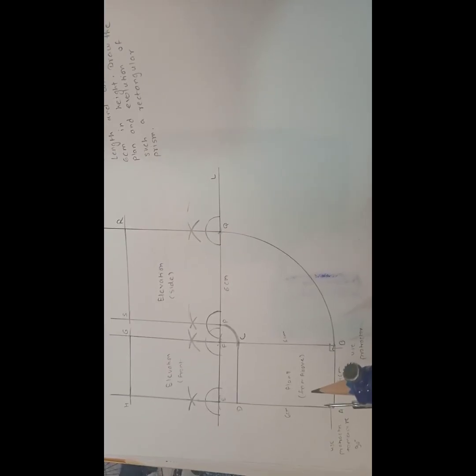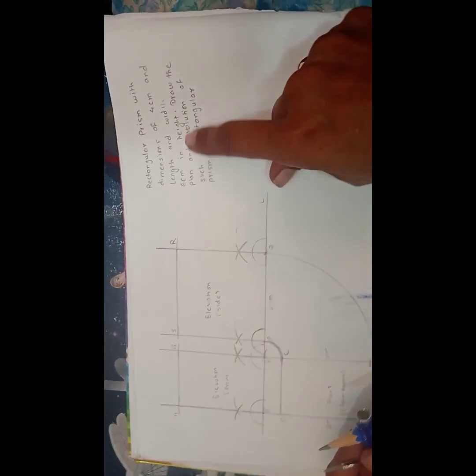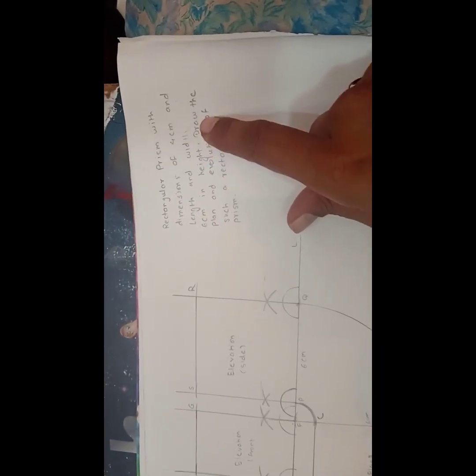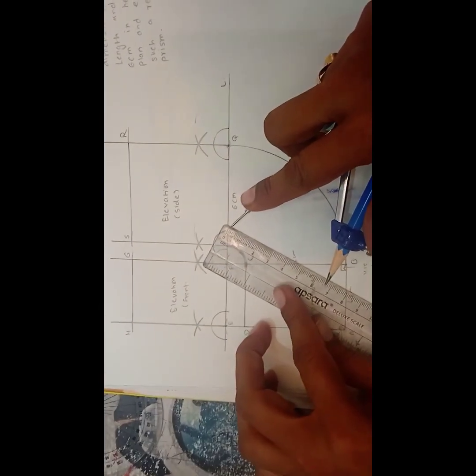Here we want the elevation of the 6 cm. Height should be the 6 cm. Here height is width and height is 6 cm.